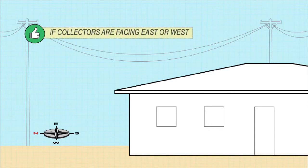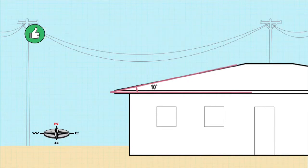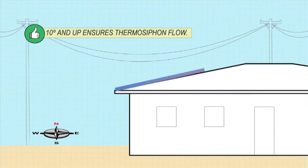If your collectors face due east or west, the lower the angle of inclination, the better. However, to allow thermosiphon flow, you must always keep the angle above 10 degrees.